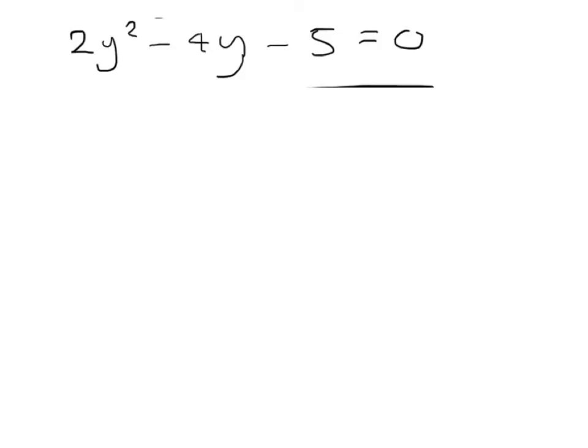We'll use the quadratic formula to solve this equation. We can see that a is 2, b is minus 4, and c is minus 5. So I'm going to put them into the formula: minus b plus or minus the square root of b squared minus 4ac, all over 2a.